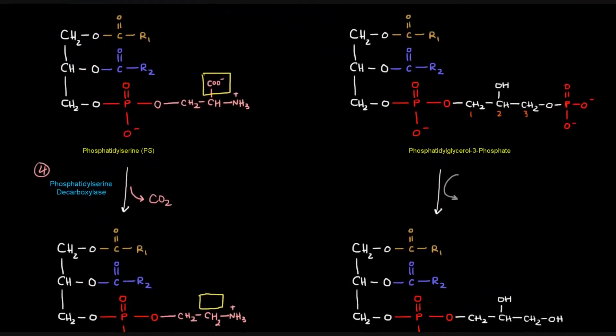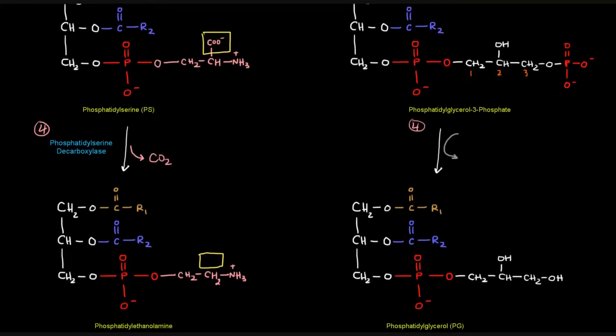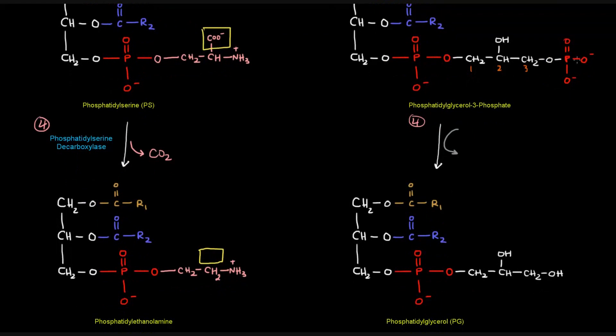Again, that's just the name of the thing that we're making, followed by synthase. So now that we have that, we can modify it to give us a different product. And basically what we're doing here, going from phosphatidylglycerol-3-phosphate to phosphatidylglycerol, is that we're removing this terminal phosphate out here. We're getting rid of this.